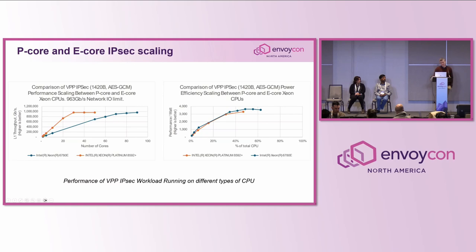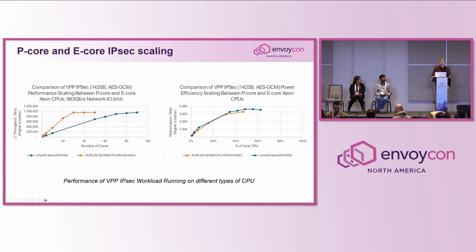We're publishing a white paper with more data on the latest generation processors and a variety of workloads. This highlights the difference between a performance core — higher frequencies, fast IPC, enhanced instruction set architecture especially for crypto — versus an efficient core, which is denser and smaller, allowing more cores per system with a better performance-per-watt profile. Look out for that white paper soon.